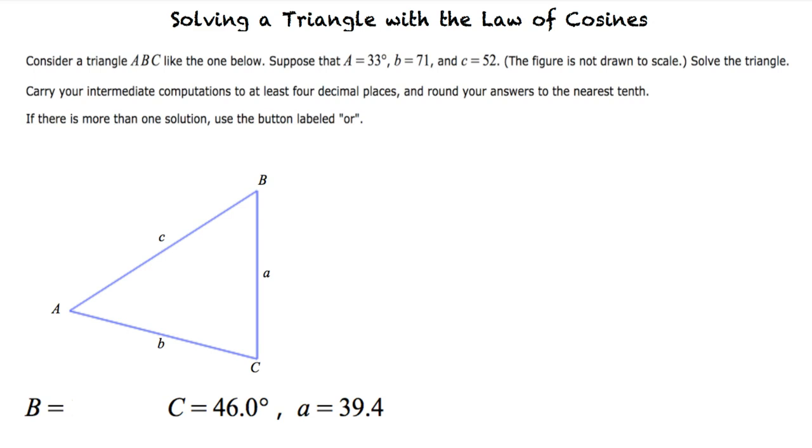Knowing that the sum of the angle measures in a triangle equals 180 degrees, we can add the values for angle A and angle C together, and then subtract them from 180 degrees to find the value of angle B. This results in 101.0 degrees.